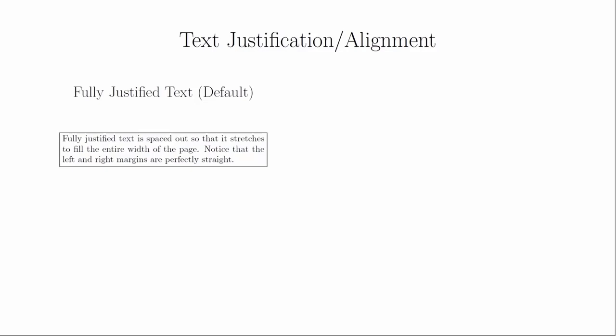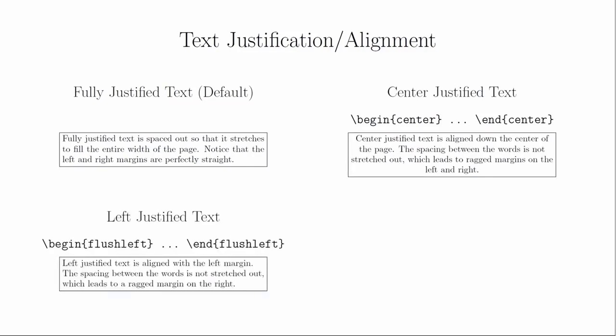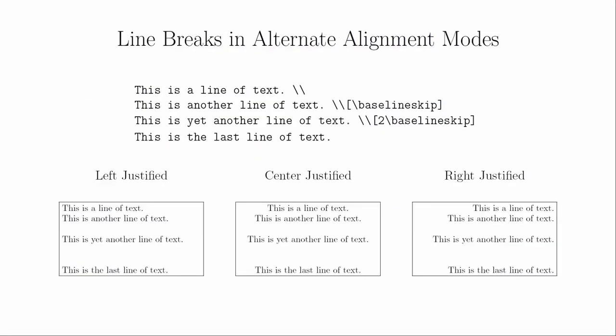Alternate alignment modes no longer attempt to do that, which gives your text ragged edges. To center the text, put it between \begin{center} and \end{center}. To left justify text, put it between \begin{flushleft} and \end{flushleft}. To right justify text, put it between \begin{flushright} and \end{flushright}. When you're in these alternate alignment modes, you can use a double backslash to start a new line. You can add extra spacing by putting in a measurement inside of the square brackets immediately after the double backslash.